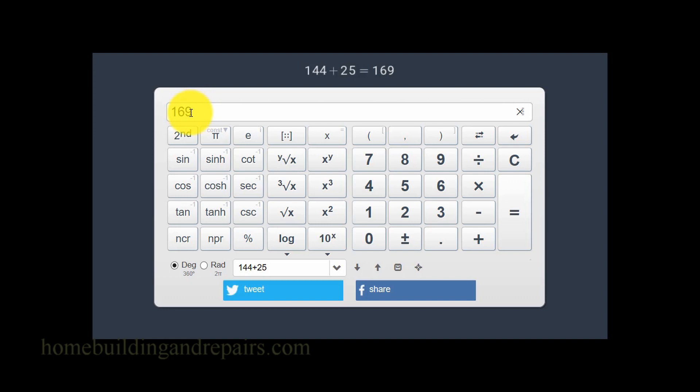We add 144 plus 25, we get 169. Now, to find the square root of 169, all we need to do is push the symbol that is going to represent the square root of the number that we had when we added side A squared and side B squared together. So the square root is just simply the reverse of squaring a number. So if we were to multiply 13 times 13, we're going to get 169. So I hope that makes sense. You're just reversing the process by using the square root symbol.